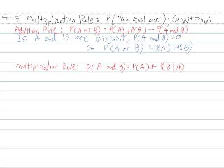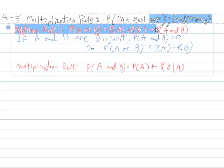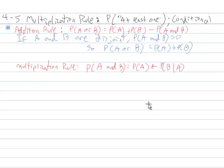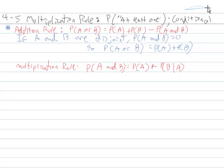And then we have the multiplication rule, which says the probability of A and B is P of A times P of B given A. Now, P of B given A is a conditional probability, so we'll look at that in more detail in the second half of this video. Sometimes when we do an addition rule, we have a table which makes P of A and B something we can compute directly. Sometimes we can't, and we have to use the multiplication rule. Similarly, to compute the multiplication rule, sometimes we know the information directly, and sometimes we have to use the definition of conditional probability to compute it.